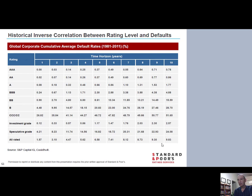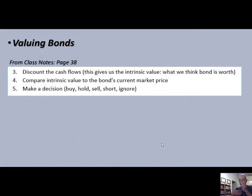That excludes recovery — you might recover 40 to 50% on average, so you can cut those numbers almost in half and still cover credit risk. So you've got your forecasted cash flows, you've got your discount rate, then you discount those cash flows to get intrinsic value, compare it to the current price, and make a decision: buy, hold, short, sell, or ignore it if it seems well-valued.